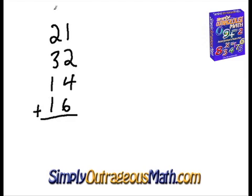So, we're going to add these together. We first know that this is the tens column, and this is the units or the ones column. And so, we're going to start by counting. 20, 20 plus 30 is 50, 50 plus 10 is 60, 60 plus 10 is 70.